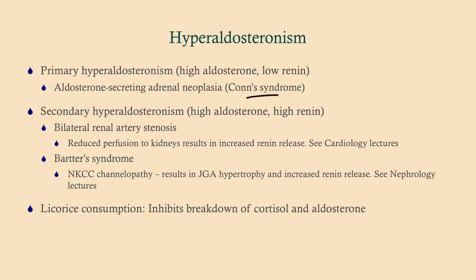Secondary hyperaldosteronism is due to high renin rather than ectopic aldosterone production. This can happen for various reasons: bilateral renal artery stenosis causes the kidneys to sense inadequate perfusion and flood the blood with renin. Bartter syndrome and Liddle syndrome are channelopathies that slightly reduce sodium reabsorption, leading to mild hypovolemia, which drives aldosterone secretion to compensate.